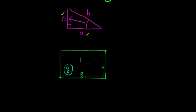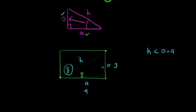What that means is that if this is the hypotenuse, the opposite, and the adjacent, one thing we do know is that the hypotenuse is smaller than the opposite plus the adjacent. So, for example, if this was 3 and that was 4 meters, then this hypotenuse will be less than 7.